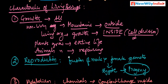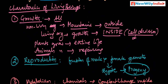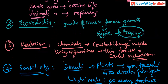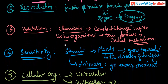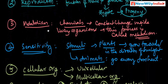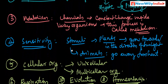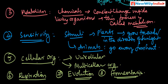To recap: the first characteristic is growth, the second is reproduction, the third is metabolism, the fourth is sensitivity, the fifth is cellular organization, the sixth is respiration, the seventh is evolution, and the eighth is homeostasis. If an object shows all these characteristics, it is called a living organism. Try to remember these.